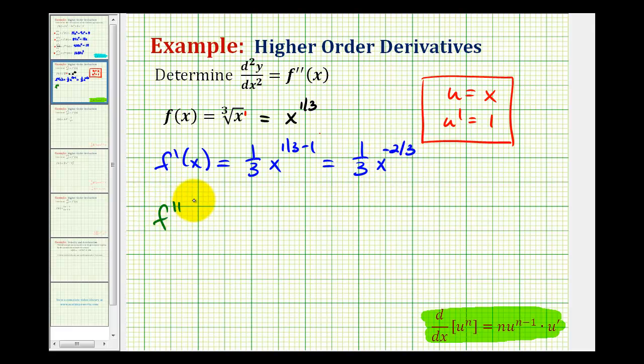So the second derivative is going to be equal to the derivative of this function. We'll have one third times the current exponent of negative two thirds times x to the negative two thirds minus one. So this would be negative two ninths times x to the negative five thirds power.